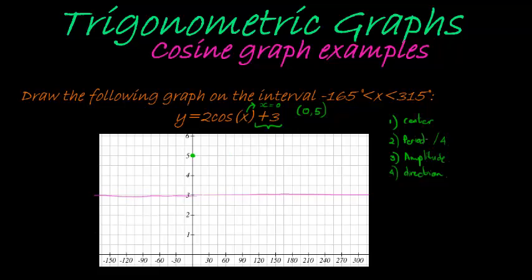For the period, we see it is 360. We take 360 and divide by the coefficient of x, in this case it's 1, so our period is 360. When we divide it into four, we see it is at 180, 90, 270, 360, same in the negative direction: negative 90, negative 180.